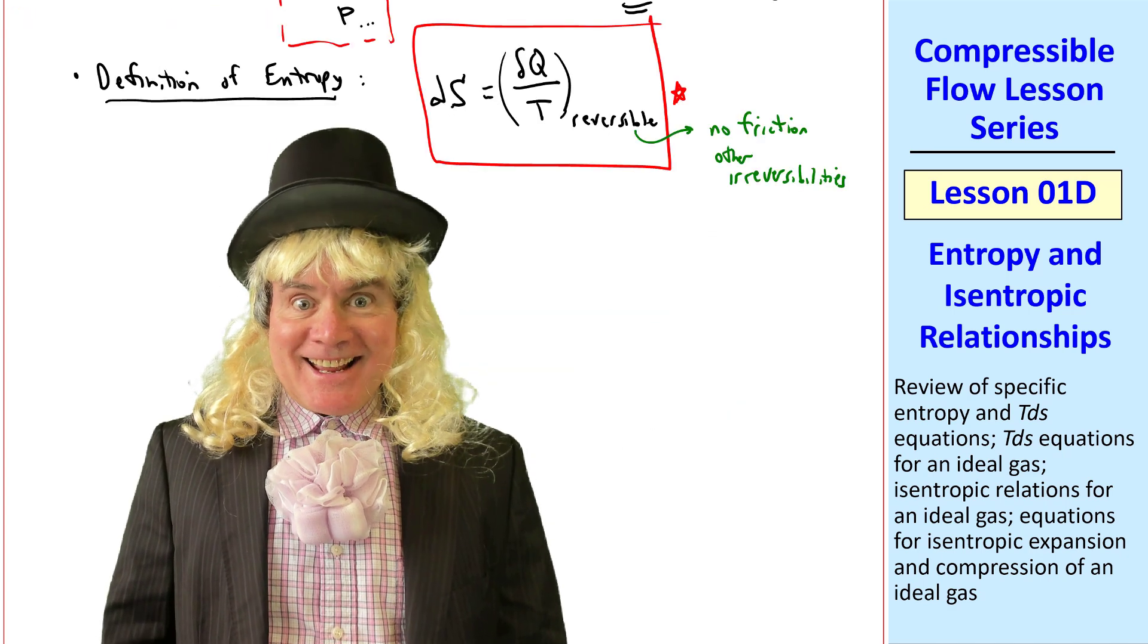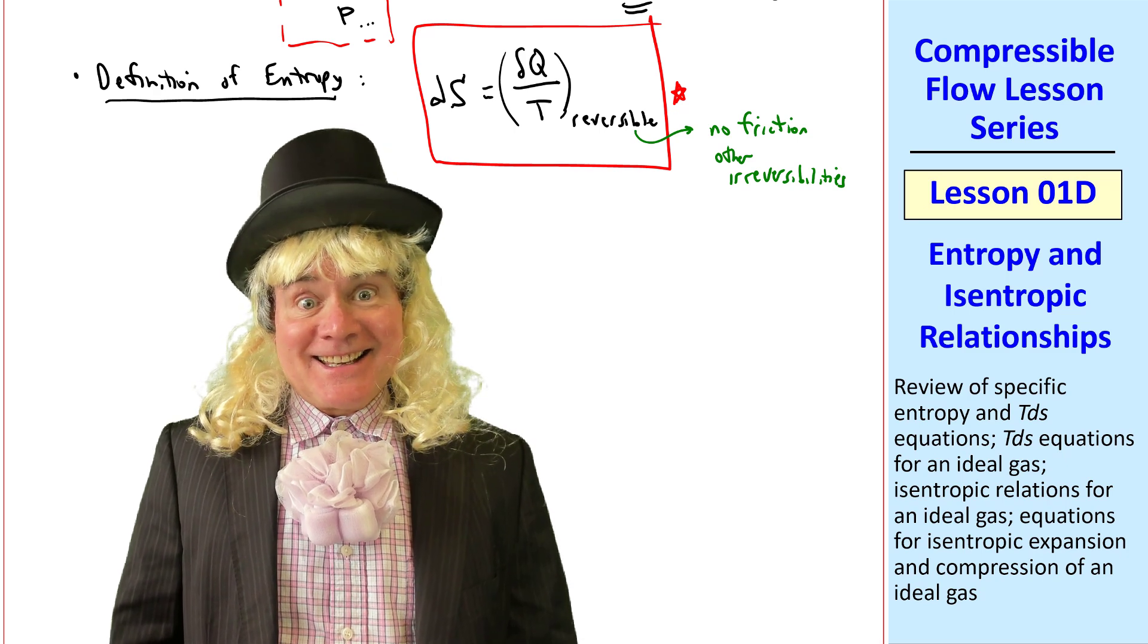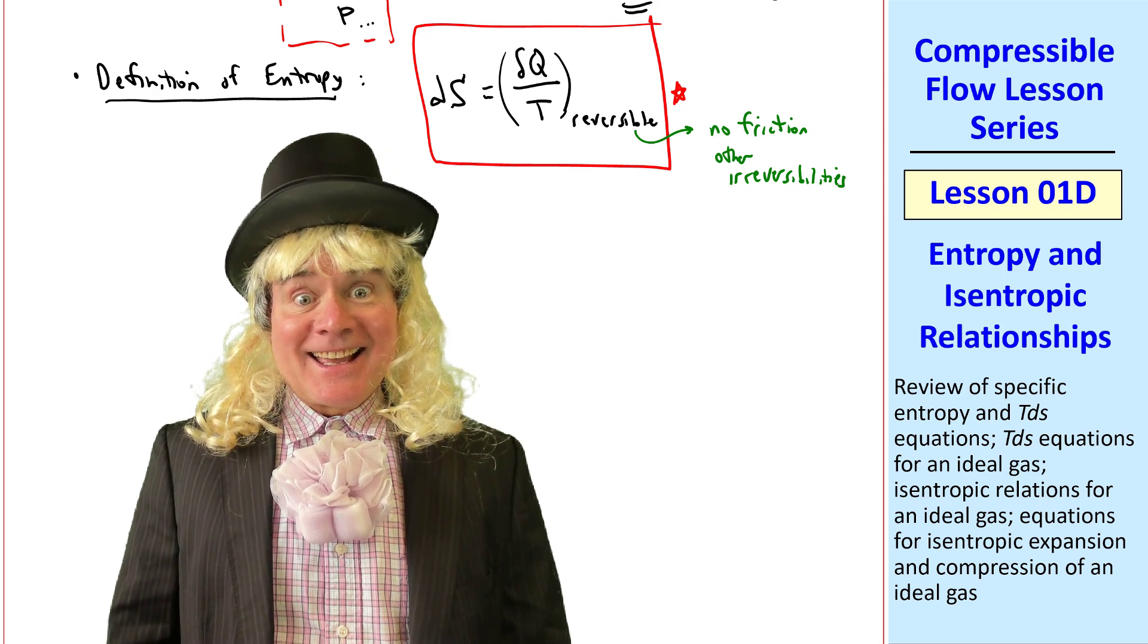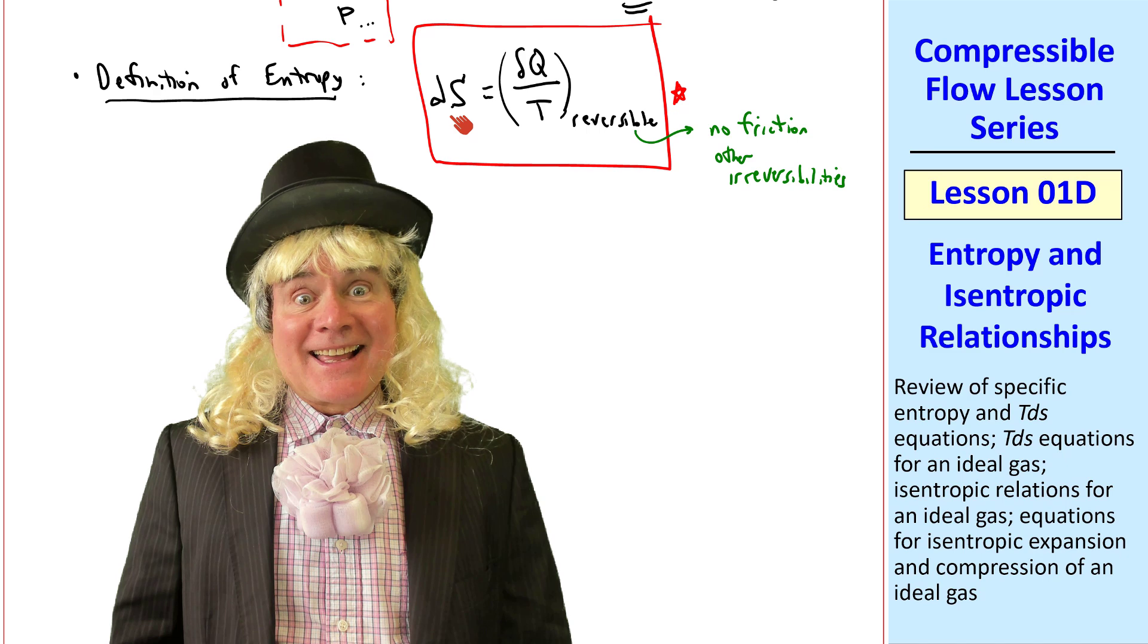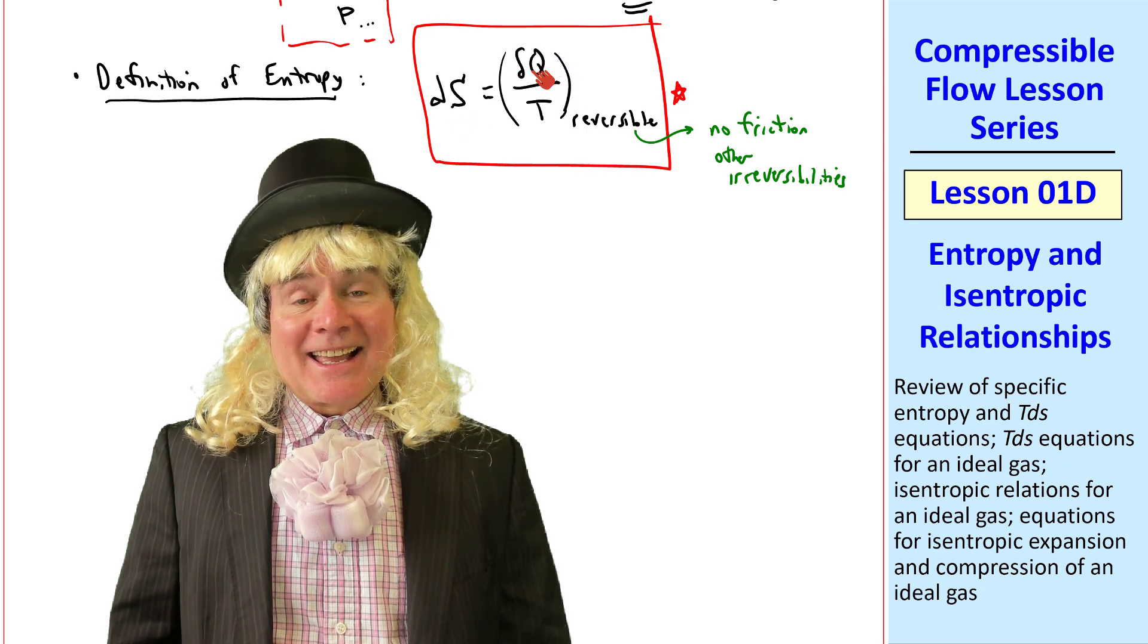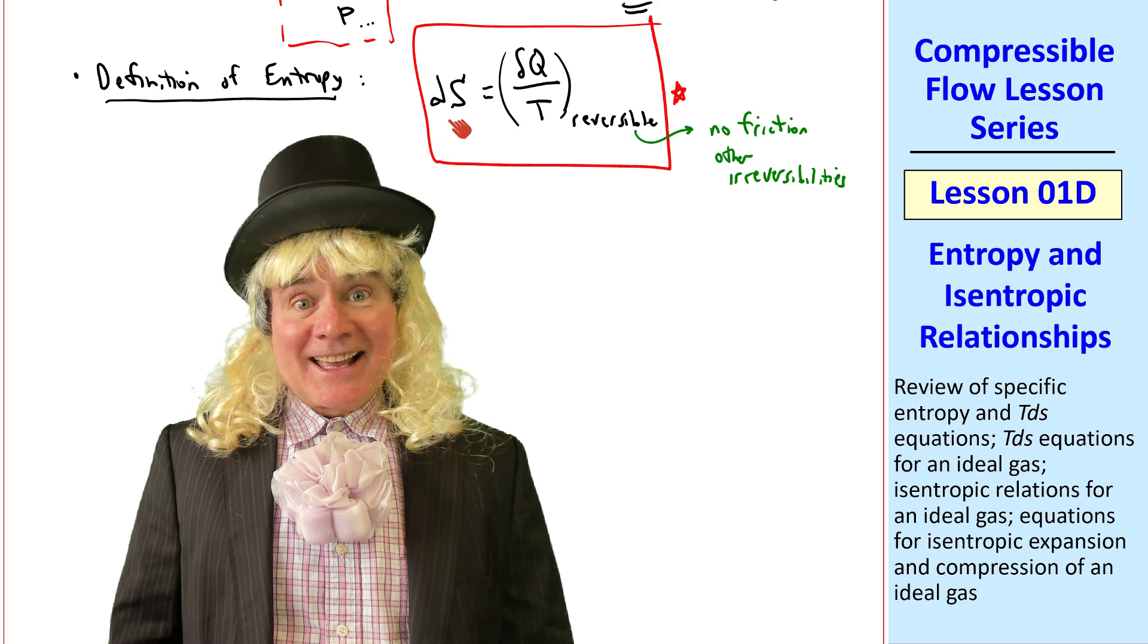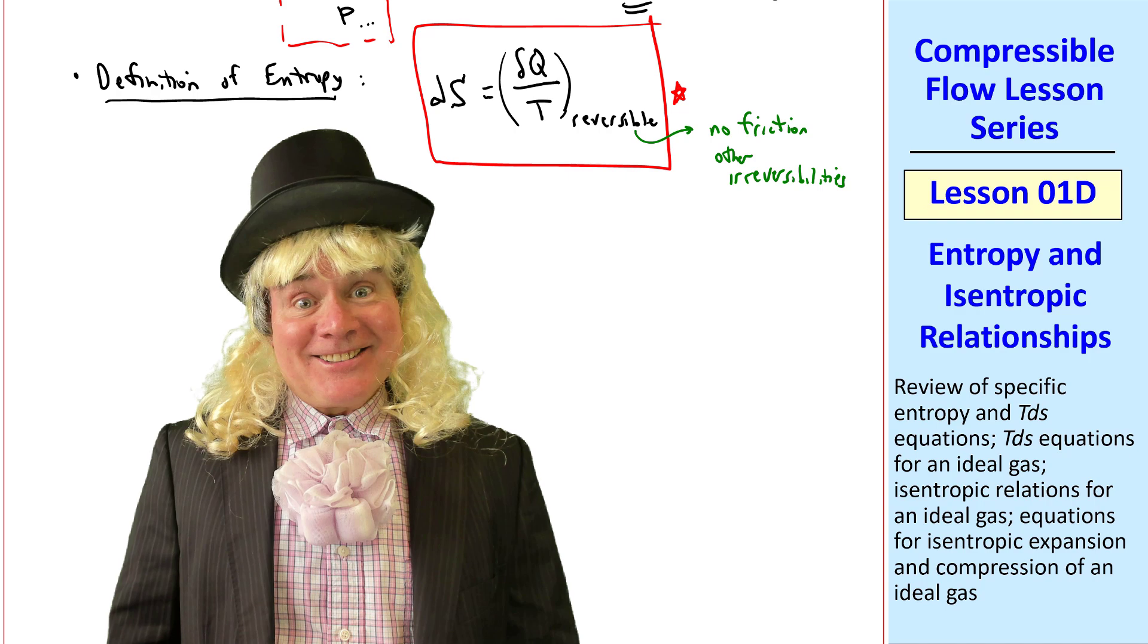I never could understand entropy. All I know is that it always increases. Actually, Willy, if delta Q is greater than zero, we're adding heat to the system, and you can see from this equation that S goes up. But if we take heat away from the system, delta Q is less than zero, and entropy actually goes down. See? I told you I don't understand entropy.